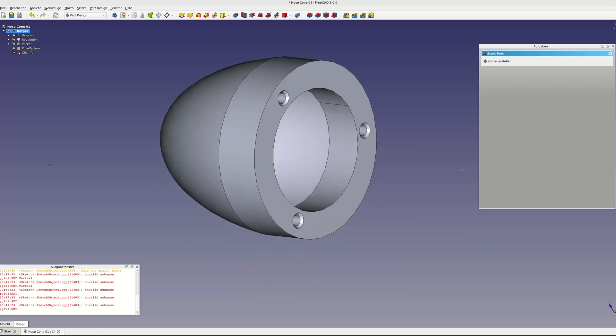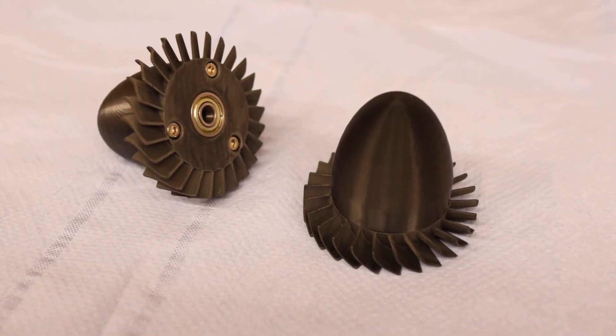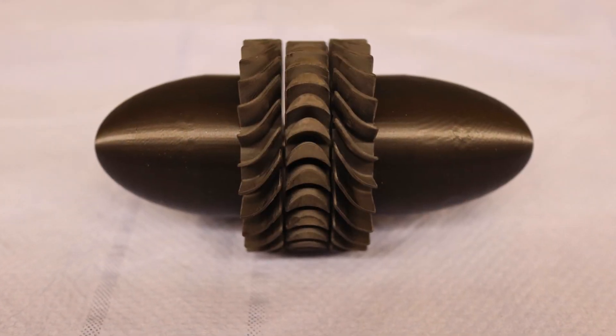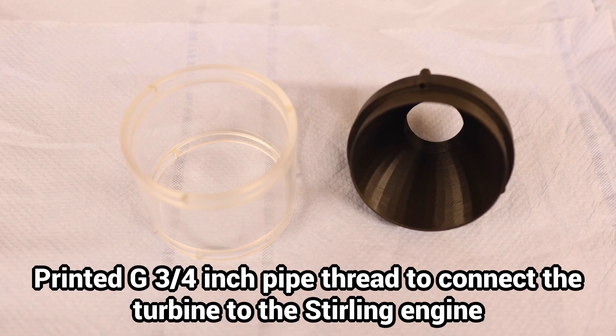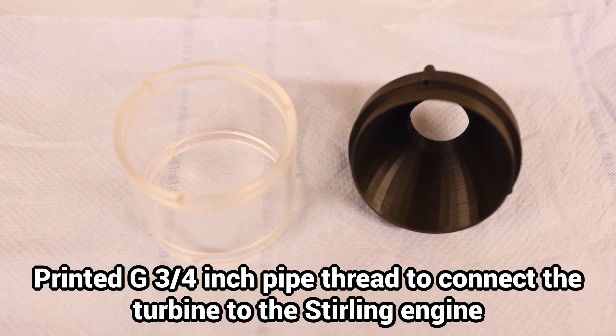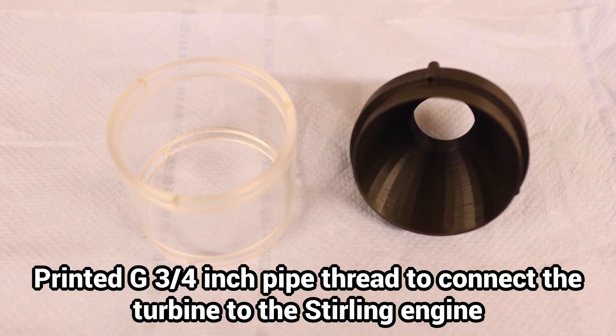The nose cones direct the acoustic pressure waves to the turbine blades. The electrical generator can be housed in the rear cone. The front housing cover is screwed airtight to the Stirling engine with a pipe thread.